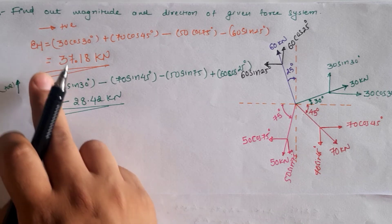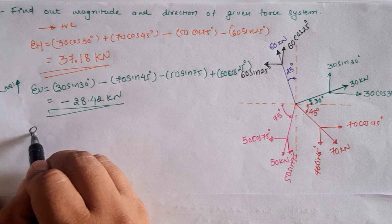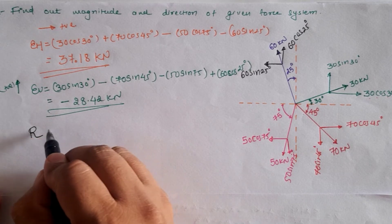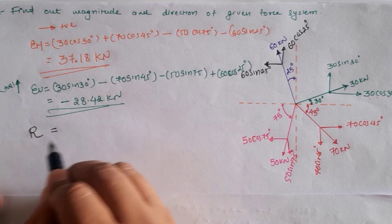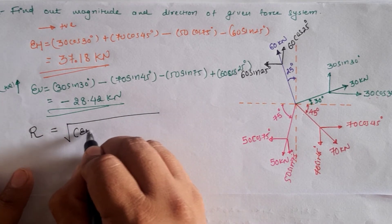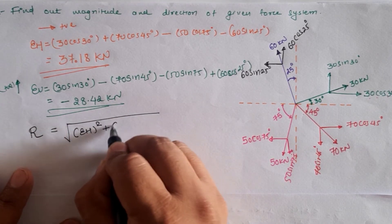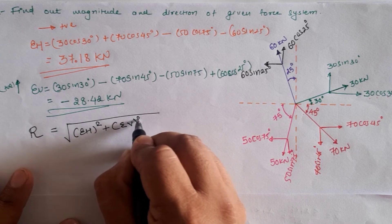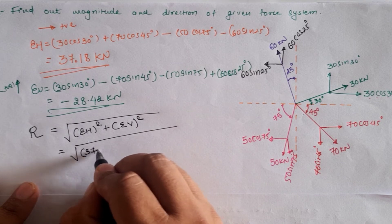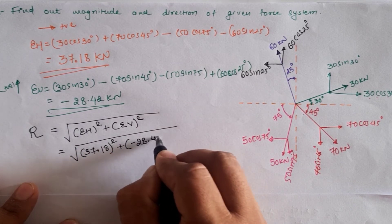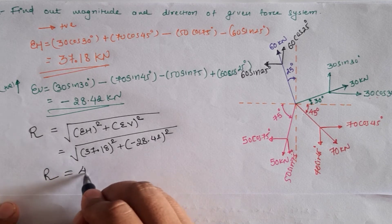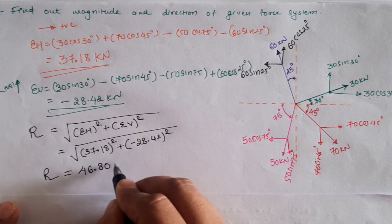After calculating sigma H and sigma V, we find the resultant of the four-force system. The equation for the resultant is the square root of (sigma H squared plus sigma V squared). Substituting the values, the resultant R equals 46.80 kilonewtons.